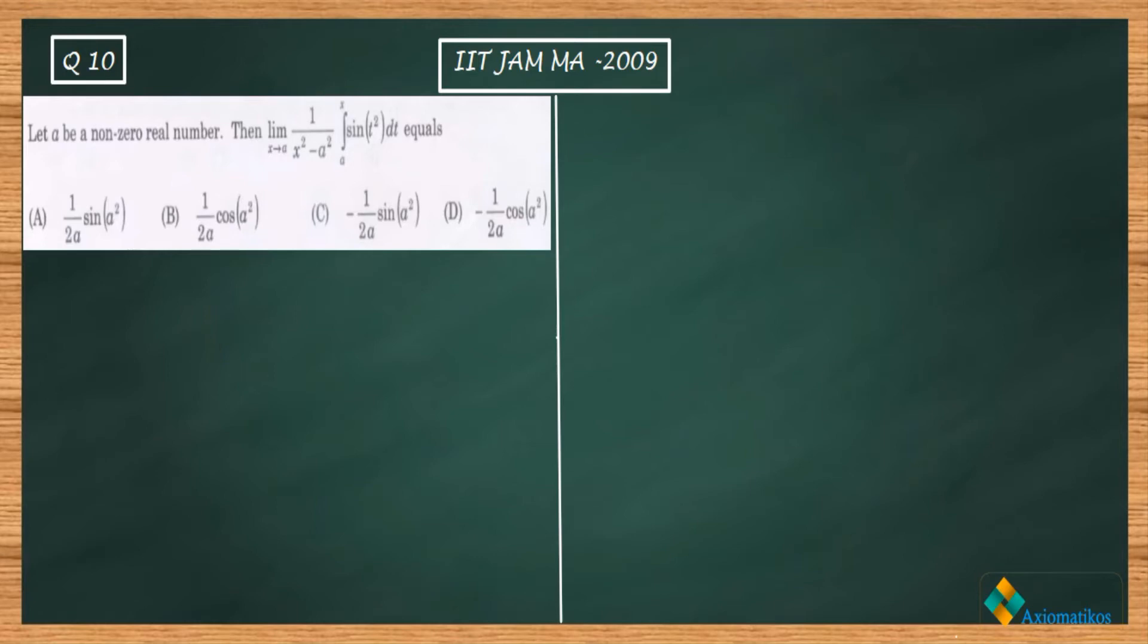The problem says: let a be a non-zero real number, then this limit - limit x goes to a, 1 over x squared minus a squared with this integral equals. You have four options, you have to find out the limit.